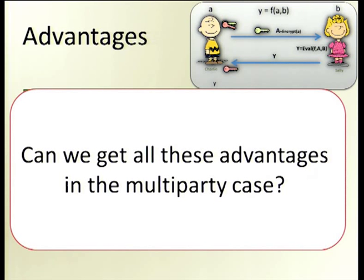In the multi-party case, we have one party that creates the keys and one party that does the homomorphic evaluation. That party should have all the encryptions of all the inputs. Once those two parties collude — the one that does the homomorphic evaluation and the one that holds the secret key — they learn all the inputs of all the other parties. So how can we get all these advantages in the multi-party setting?